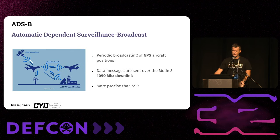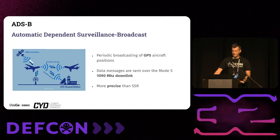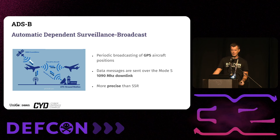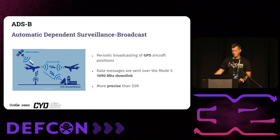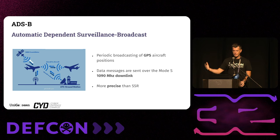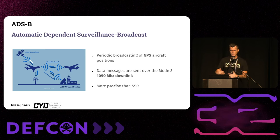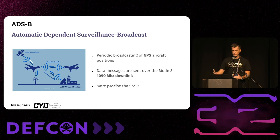ADS-B, Automatic Dependent Surveillance Broadcast, is more recent and has been mandated in various airspaces in recent years. It is also based on Mode-S, but instead of radars interrogating aircraft, the aircraft determine their own position using GNSS such as GPS, and when they know their own location they broadcast this information to surrounding aircraft and ground stations. This is much more precise than secondary radar — GPS gives a few meters accuracy compared to a few hundred meters for secondary radar, allowing decreased separation between aircraft.